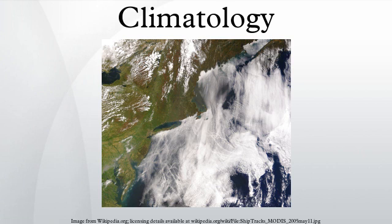Benjamin Franklin first mapped the course of the Gulf Stream for use in sending mail from the United States to Europe. Francis Galton invented the term anticyclone. Helmut Landsberg fostered the use of statistical analysis in climatology, which led to its evolution into a physical science.